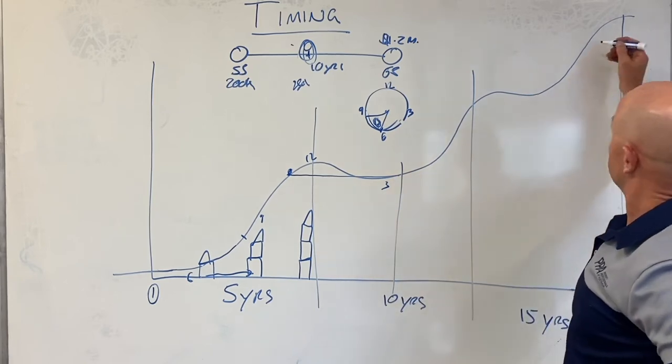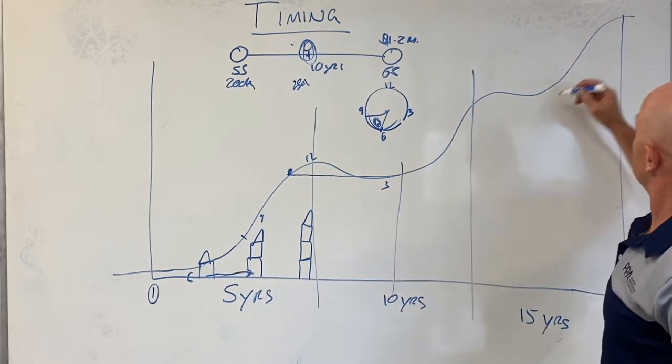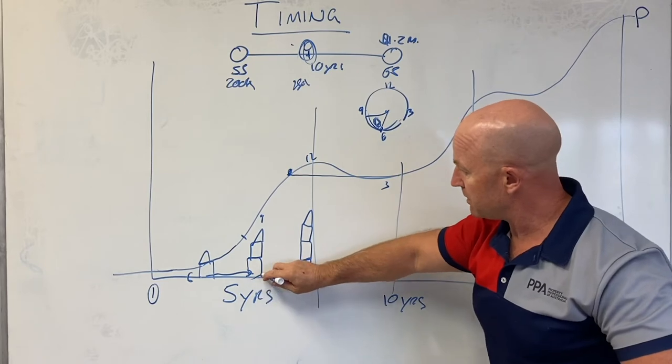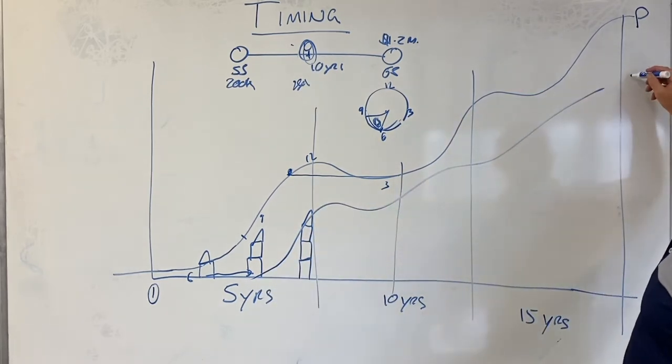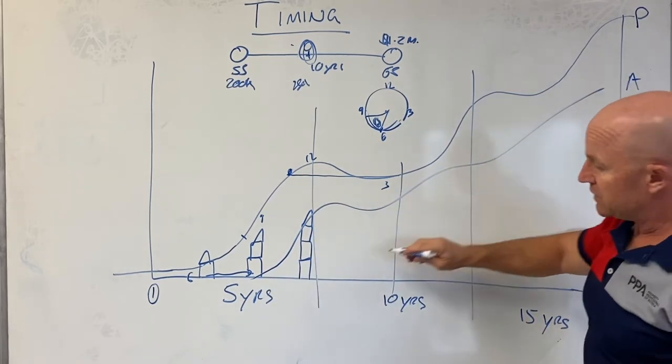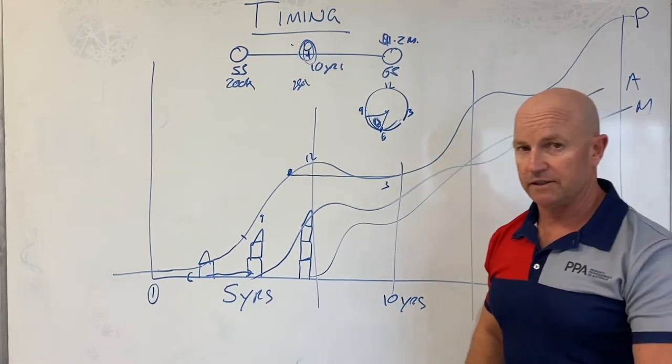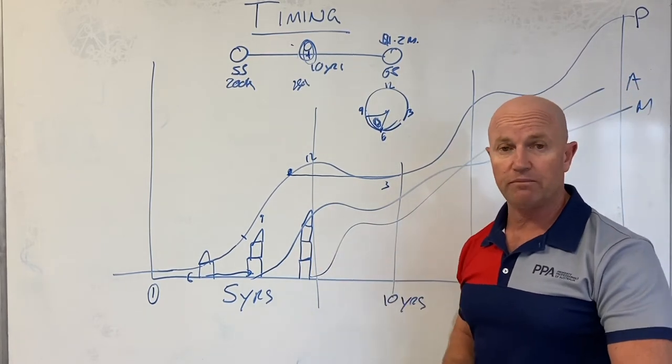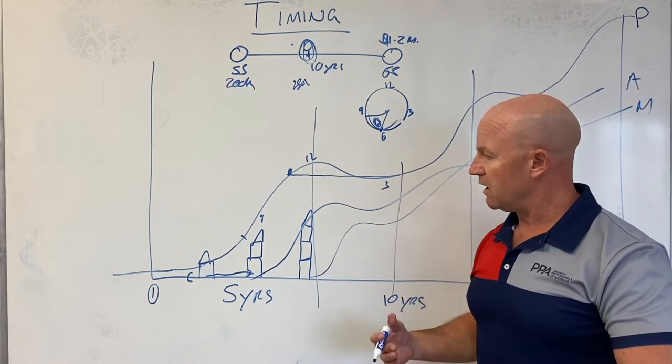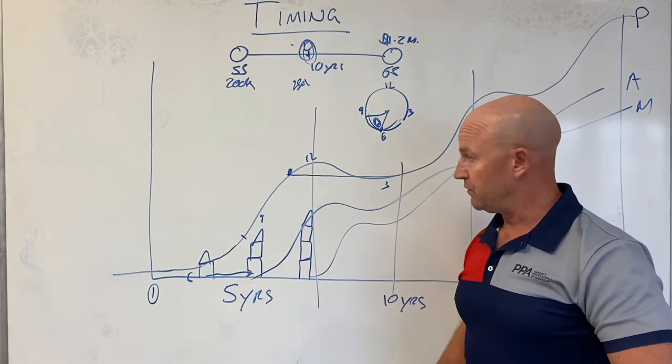This property here could be in Perth hypothetically, this property could be in Adelaide, this one could be in Melbourne hypothetically. You've got a diversified portfolio, you've bought at different times. Now you've got three properties working for you.